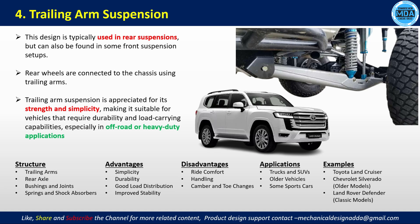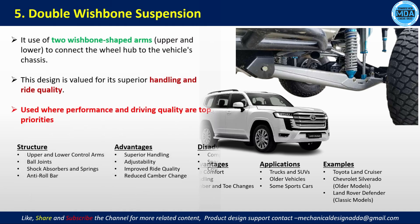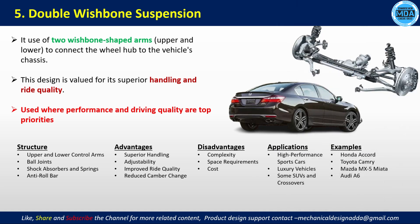Trailing arm suspension applications include trucks, SUVs, and some sport cars. Double wishbone suspension features two arms — an upper arm and a lower arm — generally called wishbone-shaped arms. Components include ball joints, shock absorber, spring, and an anti-roll bar. This suspension is used in high-performance sport cars, luxury vehicles, some SUVs, and crossovers.